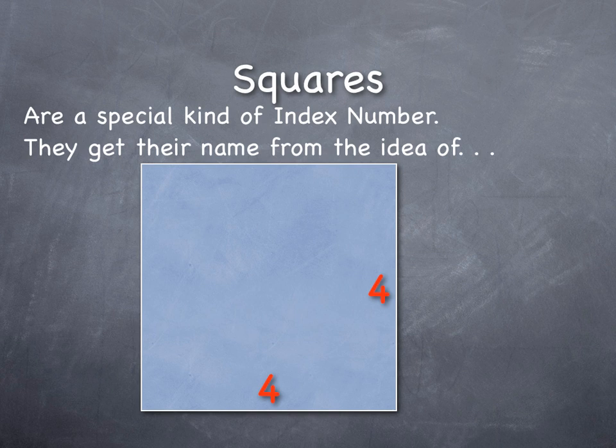So the area, if I take those sides and flip them over into an area equation, four times four—well, that's just a short way of writing four to the power of two. But anytime we have something to the power of two, we give it the special name of being square or squared.